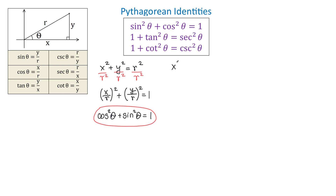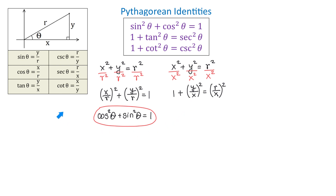Now, starting again from x squared plus y squared equals r squared, let's divide both sides by x squared. We get x squared over x squared plus y squared over x squared equals r squared over x squared, which simplifies to 1 plus y over x all squared equals r over x all squared. Since y over x is tangent of theta and r over x is secant of theta, we get 1 plus tangent squared of theta equals secant squared of theta. This is the second identity.